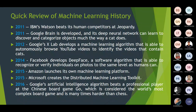In the year 2012, Google's X Lab developed a machine learning algorithm able to autonomously browse YouTube videos to identify videos that contain cats. Those videos which have content featuring a cat were successfully classified by this machine learning algorithm developed by Google in 2012.